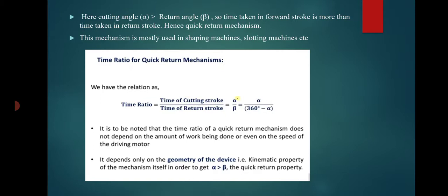It is to be noted that the time ratio of a quick return mechanism does not depend on the amount of work done or on the speed of the driving motor. It depends only on the geometry of the device — that is, the kinematic property of the mechanism itself. In order to get the quick return property, alpha must be greater than beta. The cutting angle and return angle together determine the time ratio.